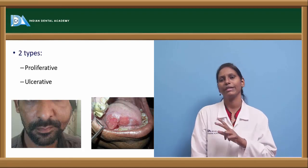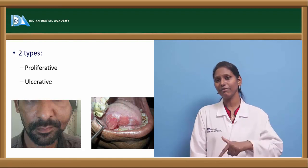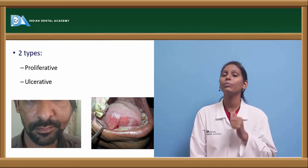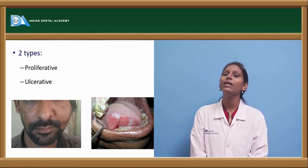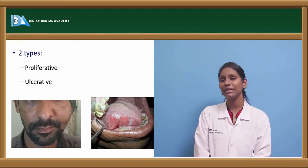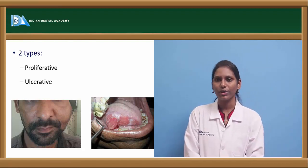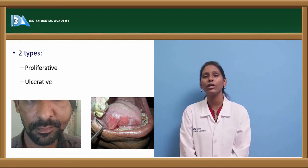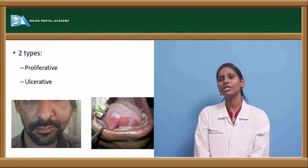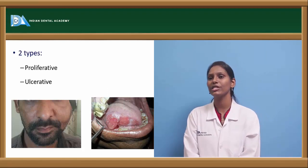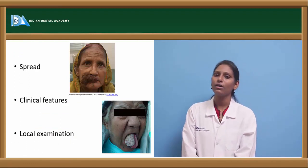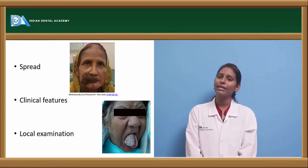Coming to types of squamous cell carcinoma: we have broadly two types — proliferative type and ulcerative type. A third variant is where the proliferative growth ulcerates, called an ulceroproliferative lesion. When describing a case, if there is an ulcer along with proliferation, we describe it as an ulceroproliferative lesion. In the first picture a proliferative variant is seen; in the second picture there is an ulceroproliferative variant.